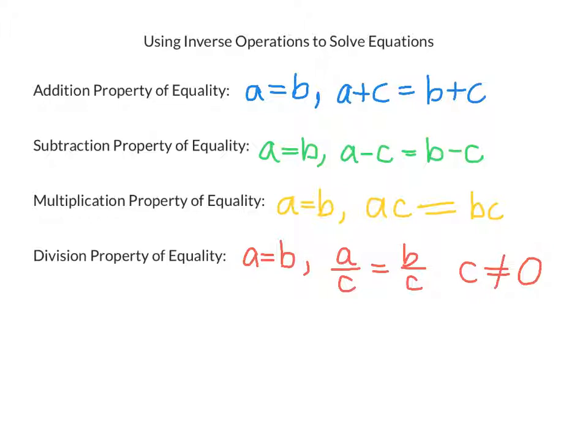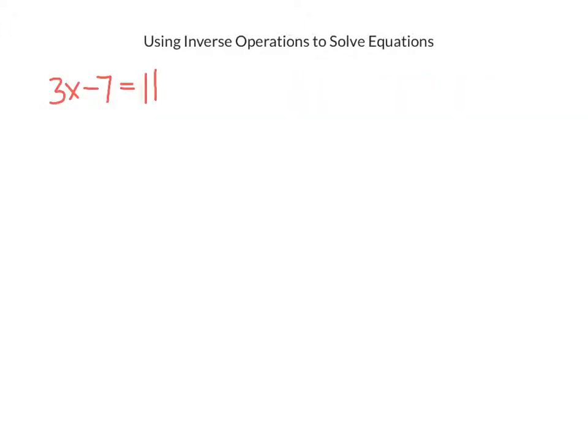So now that we know what we can do to both sides of an equation, let's look at a couple of two-step equations. Let's start with 3x minus 7 equals 11. This is called a two-step equation because there are two operations happening to x. It's being multiplied by 3, and then 7 is being subtracted from it.